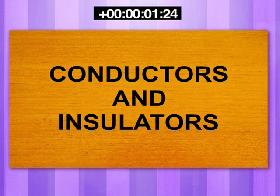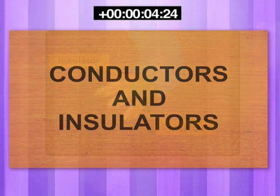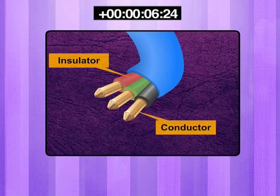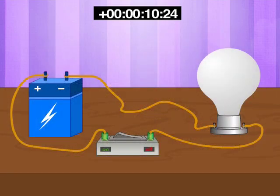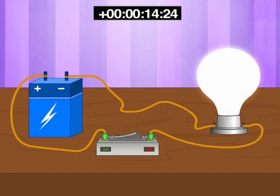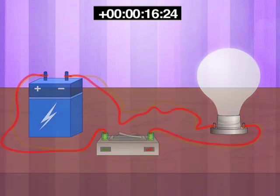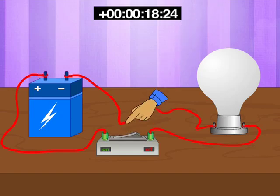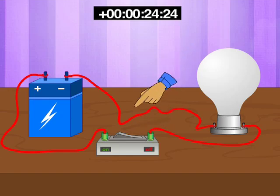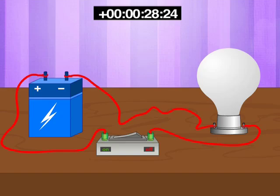In this module, you will learn about conductors and insulators. They both are used for different applications in daily lives. Conductors are materials that allow electricity to flow through them easily. Insulators do just the opposite — materials which do not allow electricity to flow through them are called electrical insulators.